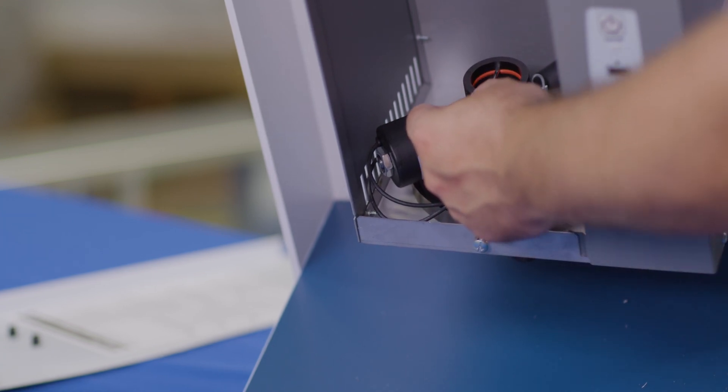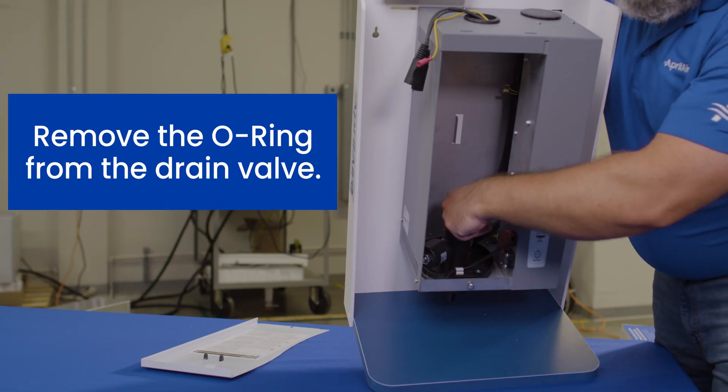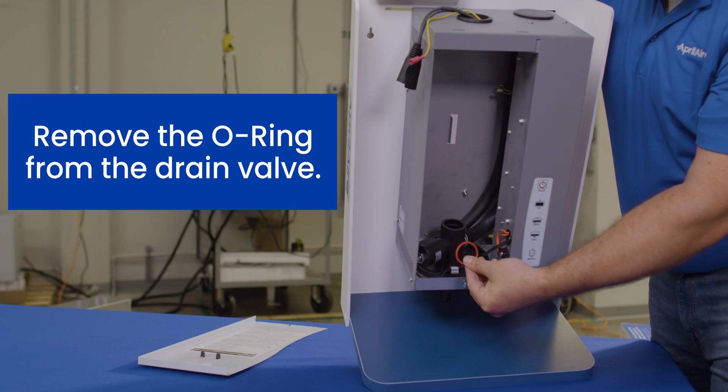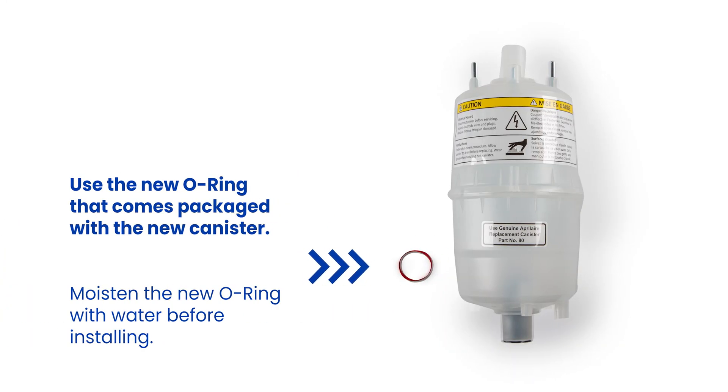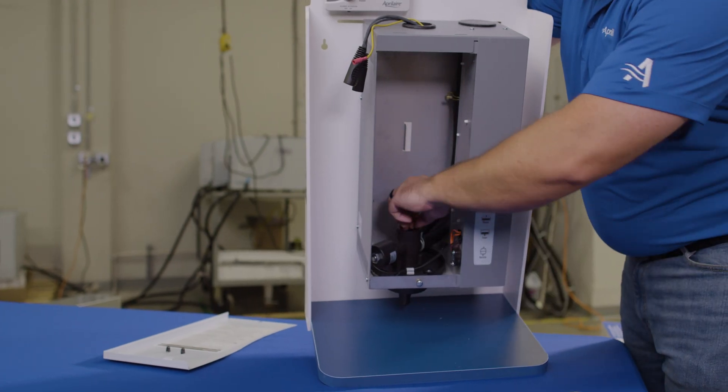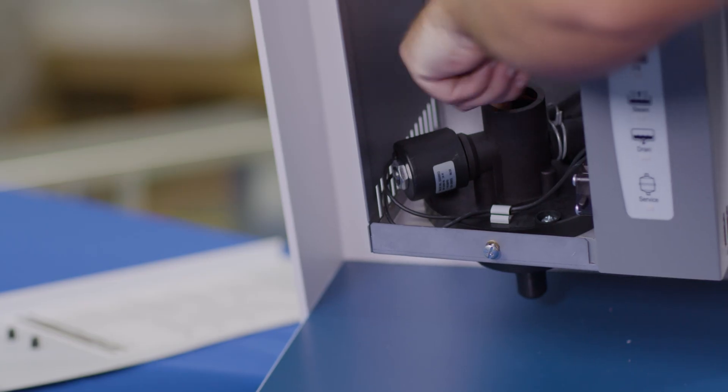Use a small screwdriver to remove the o-ring currently in the unit and replace it with the one that came with your new canister. Dampen the o-ring with water, then push it down until it's seated into the groove inside the valve.